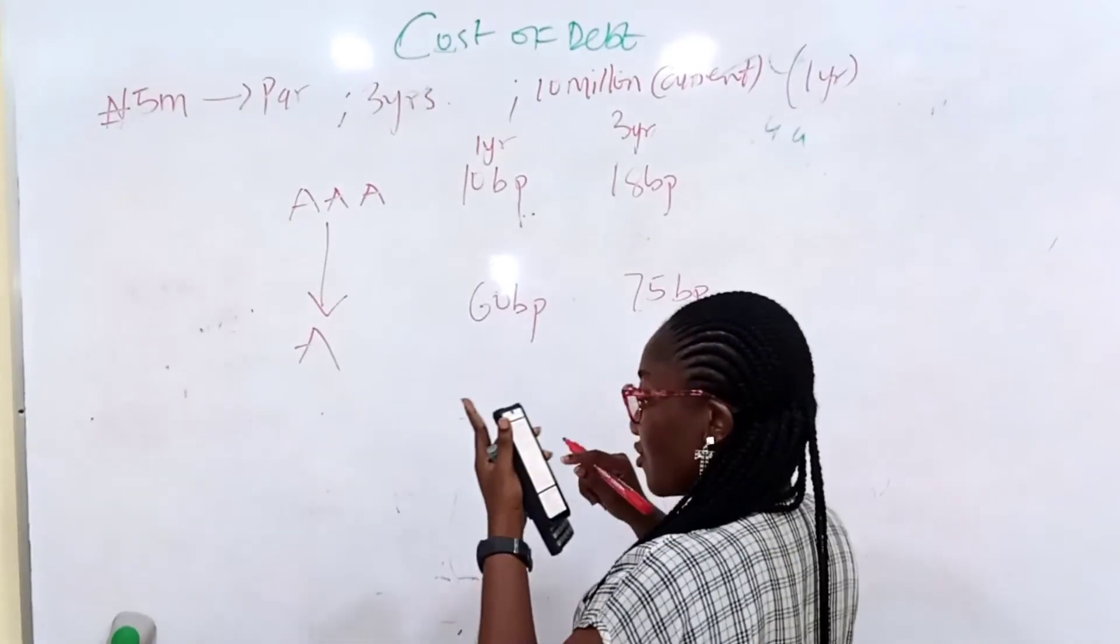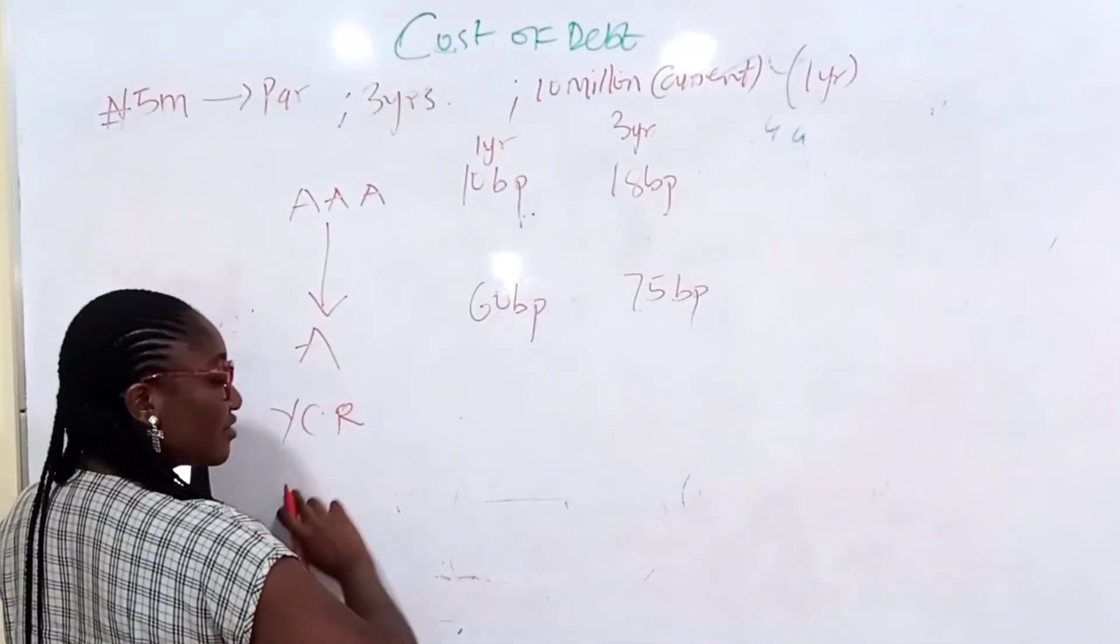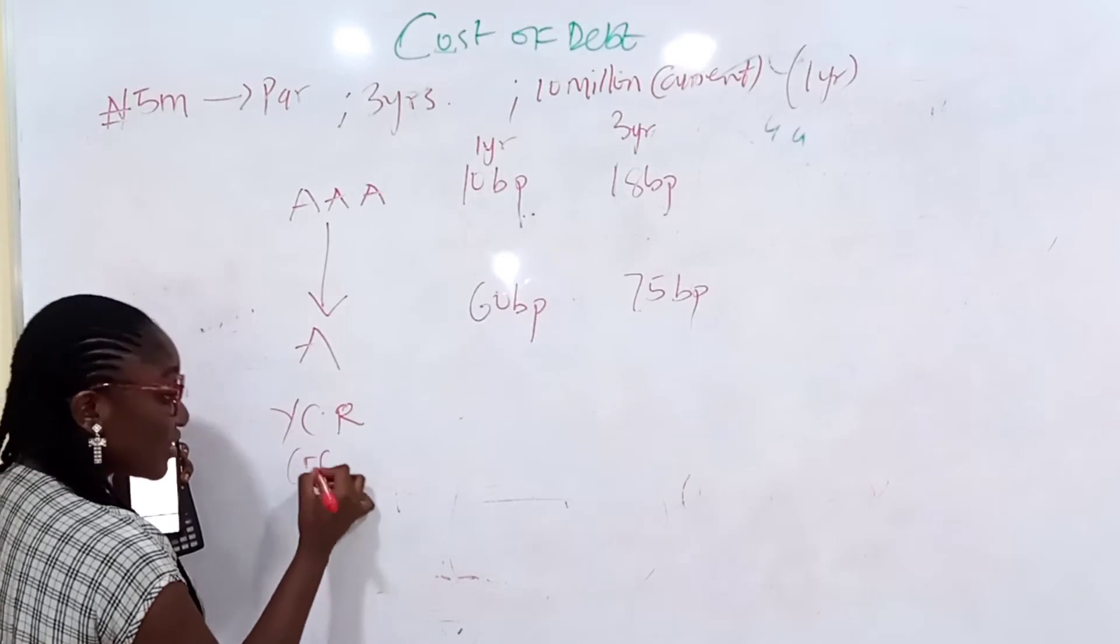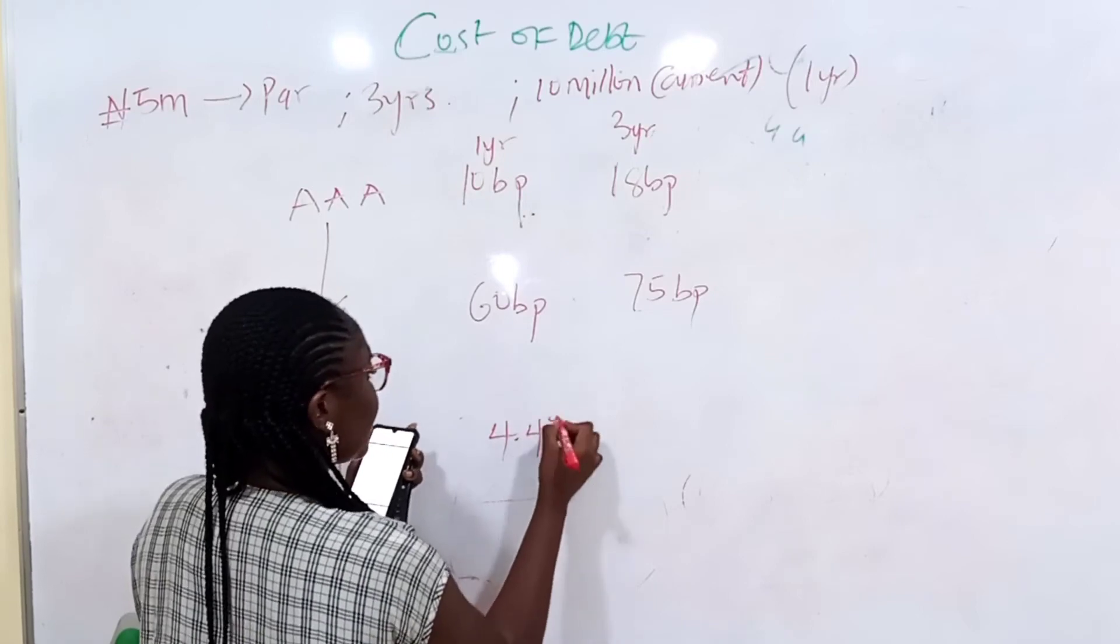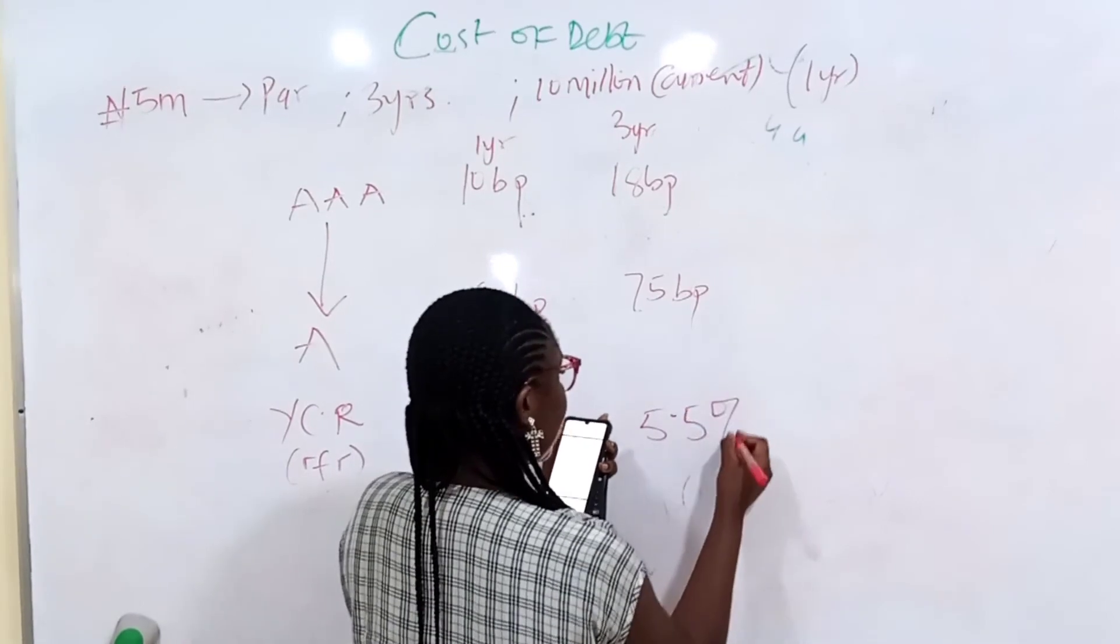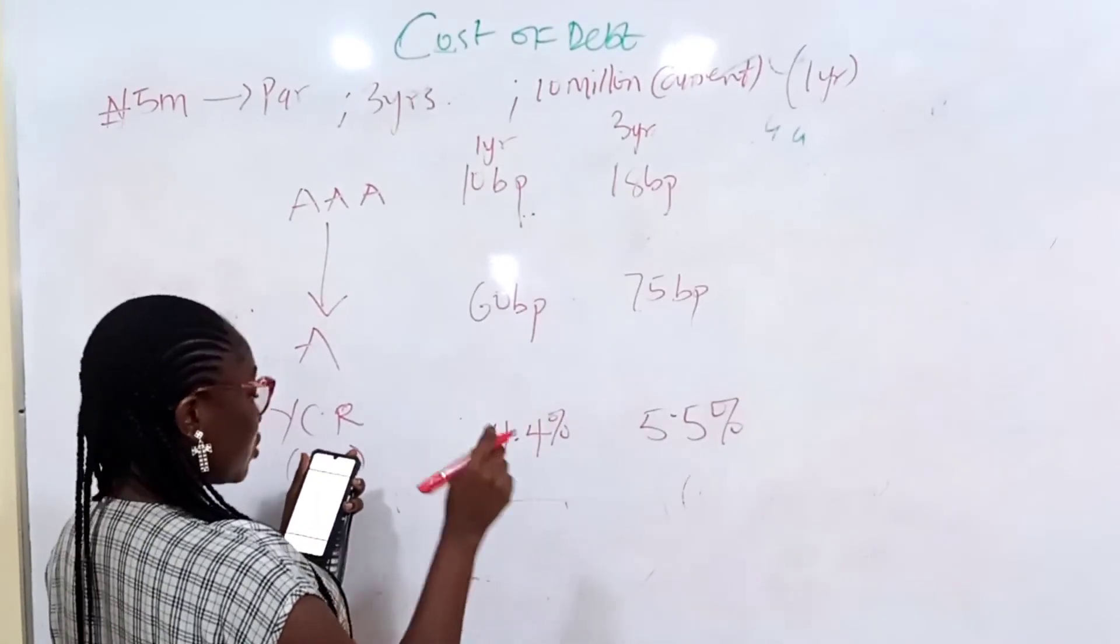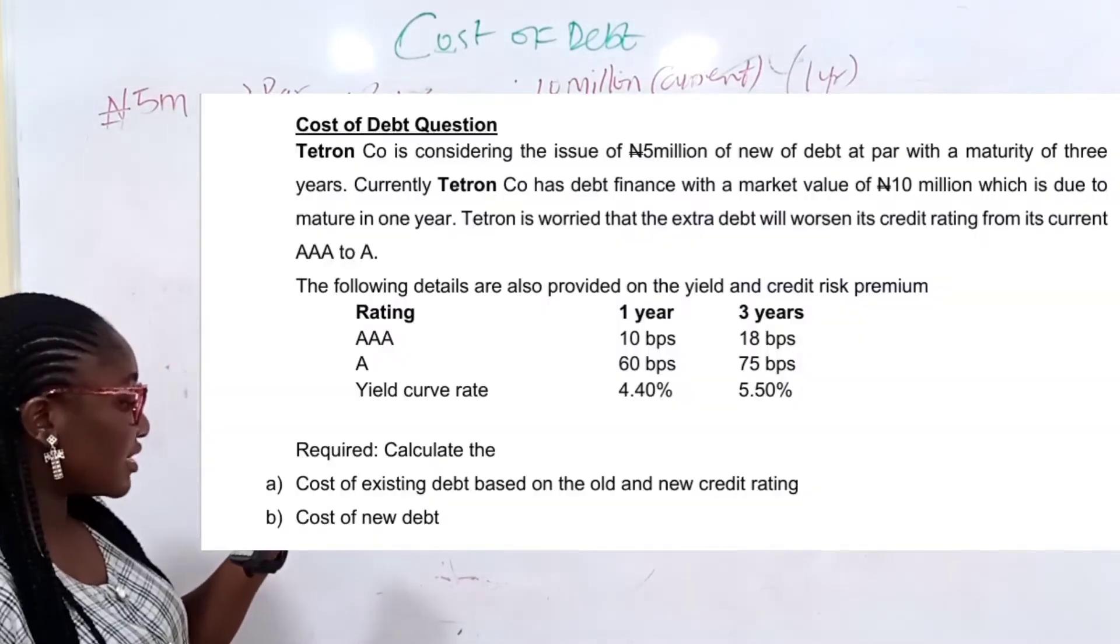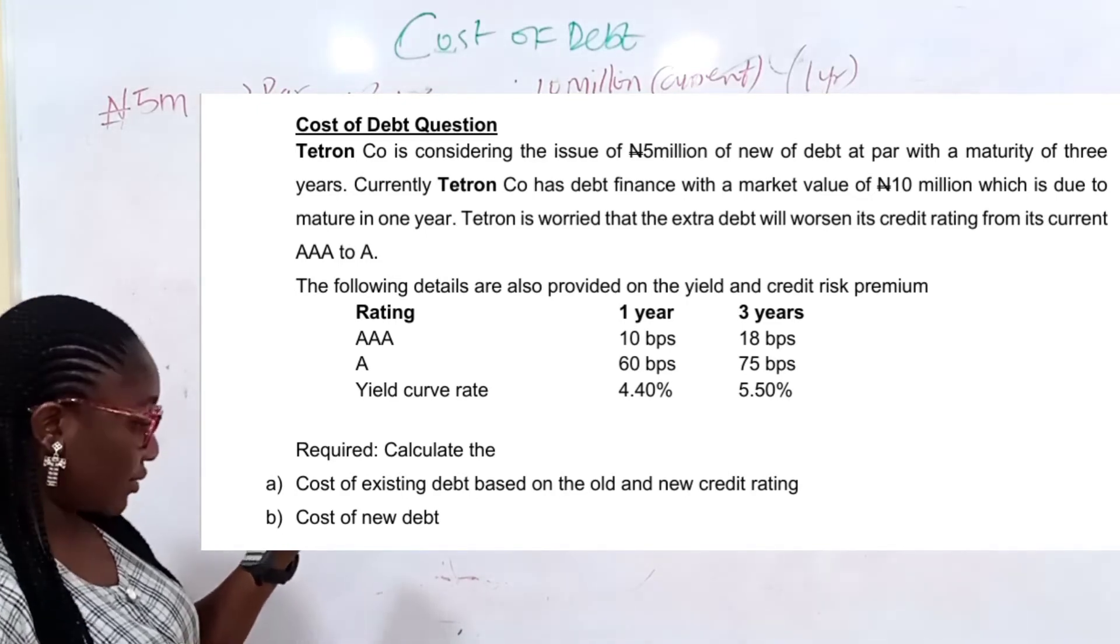If the company is looking at AAA, it is 18 basis points. And once it falls to A, it is 75 basis points. Higher cost. The risk is higher. So the cost should be higher. And cost here is the minimum required rate of return. Now they give you the yield curve rate. This yield curve rate is a curve, like an average of points that have similar maturities. So it is just the risk free rate. They gave it to you as 4.12% after 1 year, and they gave it to you as 5.5% after 3 years.